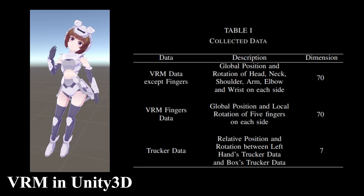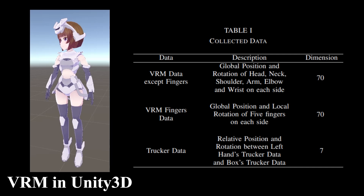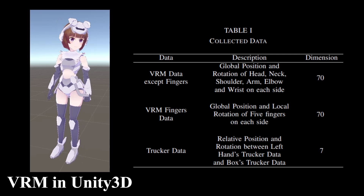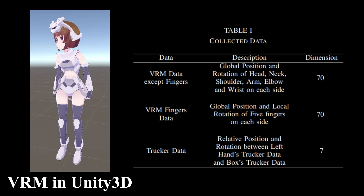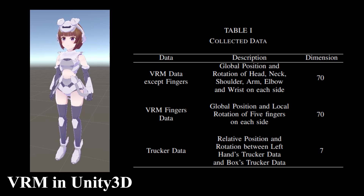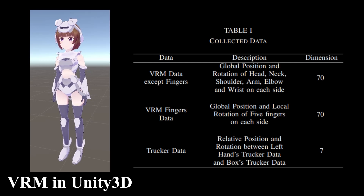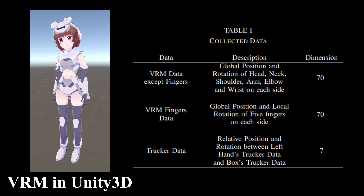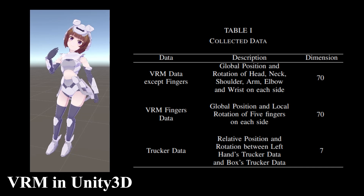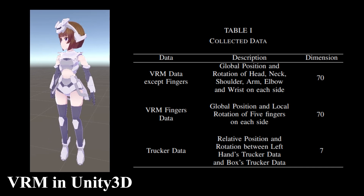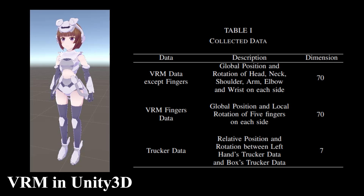In our motion data correction method using Unity 3D, we record the position and rotation of each joint in a VRM model as time-series data for robot motion. We collected grasping motions of a box, including the relative position and rotation between the left hand and the box, to simplify the motion generation process. The total motion data is 147 dimensions.